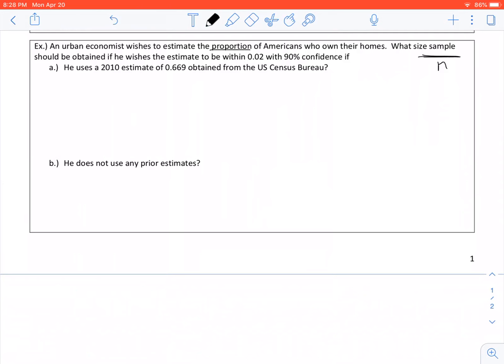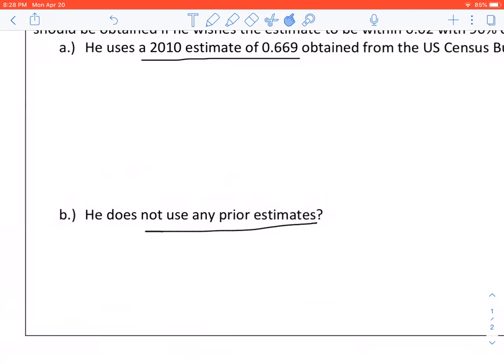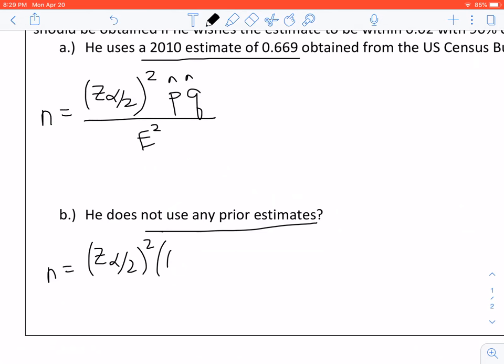If you find those in your notes, you have two different formulas. One uses a prior estimate, which is like what part A does. It says he uses a 2010 estimate of 0.669 obtained from the U.S. Census Bureau. And then part B is the other one where he does not use any prior estimate or no prior knowledge is known. From here, I'm going to go ahead and copy down the formulas that we have. Formulas are N equals Z alpha over 2 squared times P hat Q hat all over E squared. And if you do not know any prior estimate, it's Z alpha over 2 squared times 0.25 all over E squared.